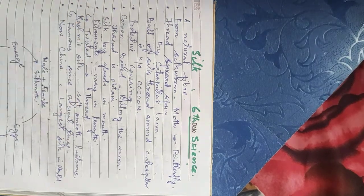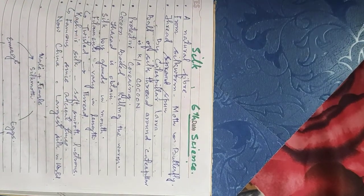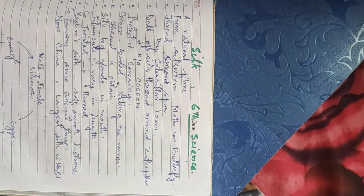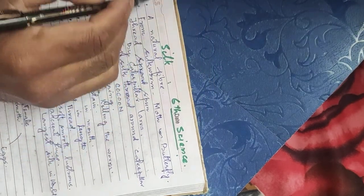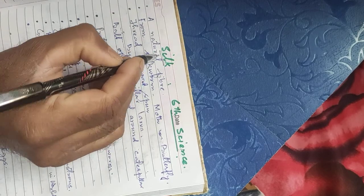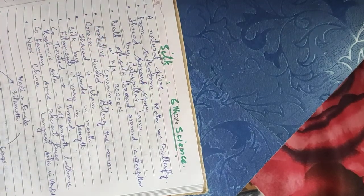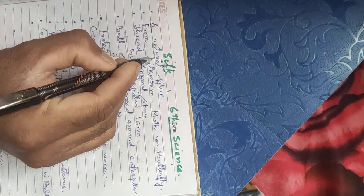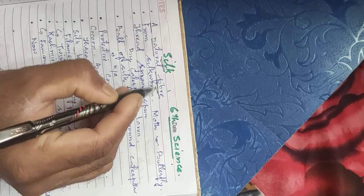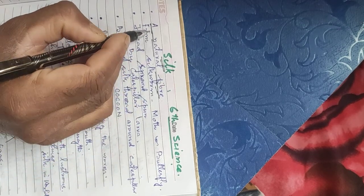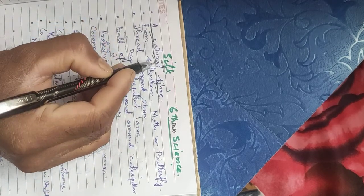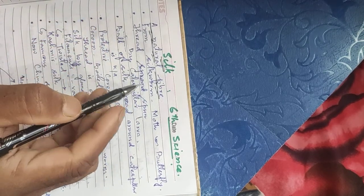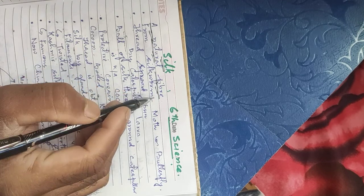Assalamu alaikum warahmatullah, dear students. This is Class 6 Science. Our topic is silk. As we know, silk is a natural fiber which is obtained from living things.